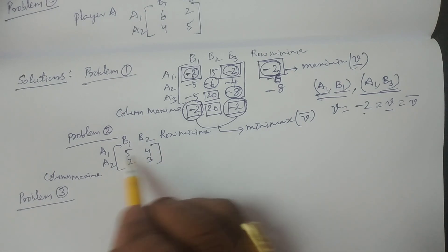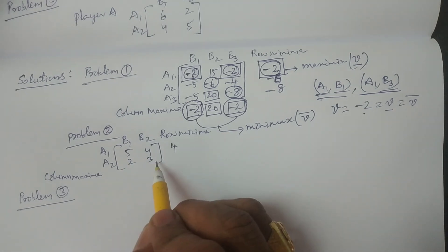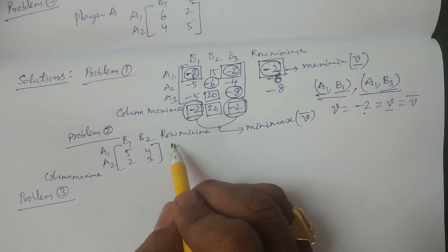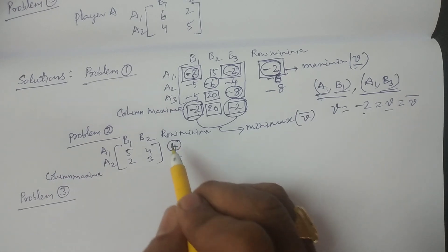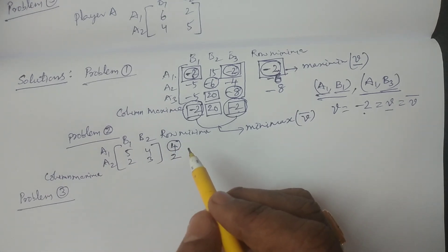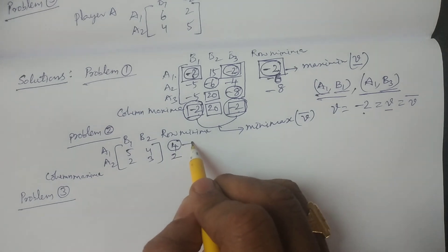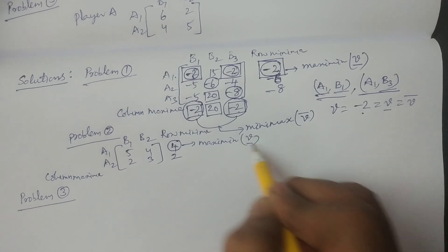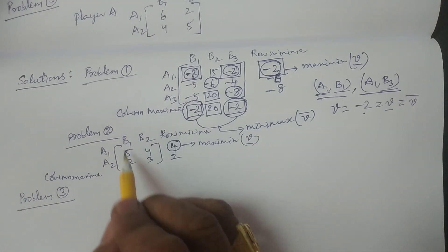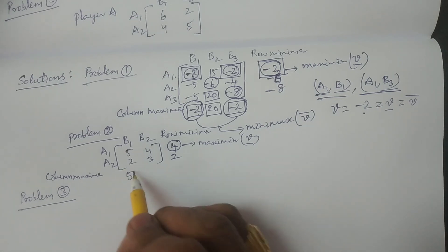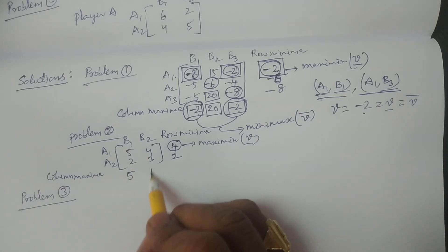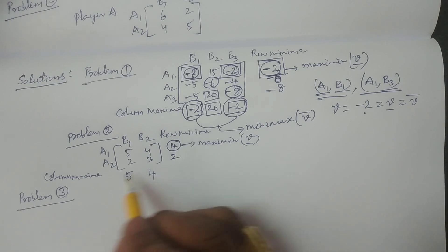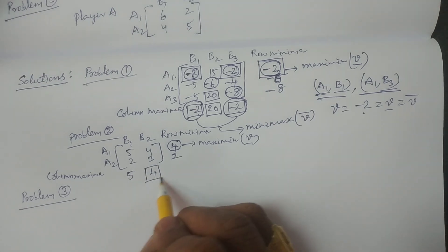Row minima: first row minimum of 5 and 4 is 4; second row minimum of 2 and 3 is 2. Among these the maximum value is 4, which is the maximin value denoted by mu underscore. Column maxima: first column maximum of 5 and 2 is 5; second column maximum of 4 and 3 is 4. The minimum among these maxima is 4 — draw a rectangle around it.